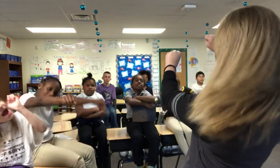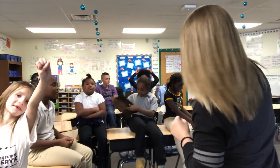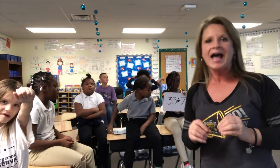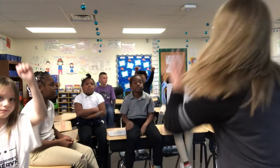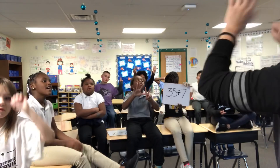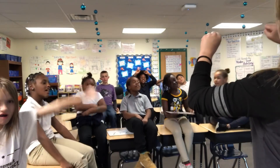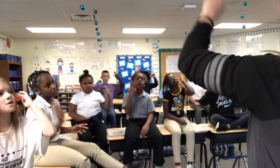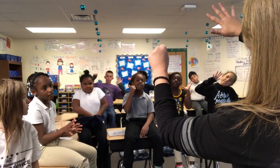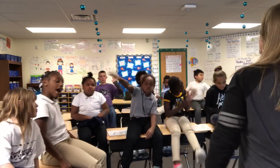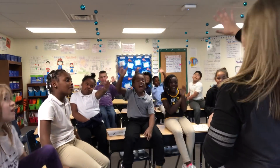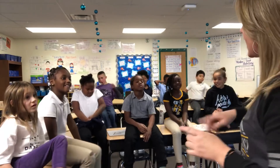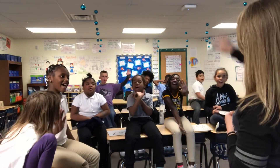Next we are going to show you two division problems. So instead of using your fingers, you will use your fist. Our division problem is thirty-five divided by seven. So you will count by seven until you get to thirty-five. Ready, go. Seven, fourteen, twenty-one, twenty-eight, thirty-five. Awesome. How many fingers do you have up? Five. So thirty-five divided by seven is five. Awesome.